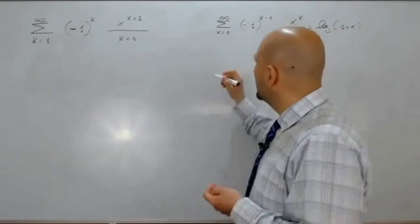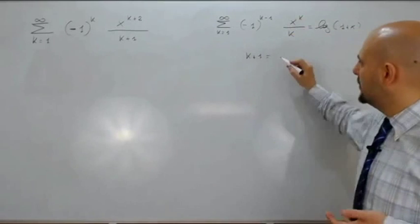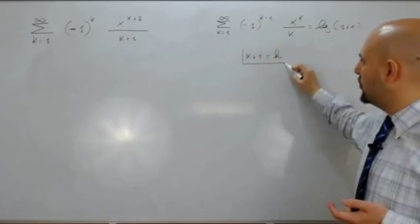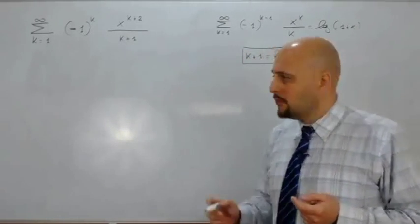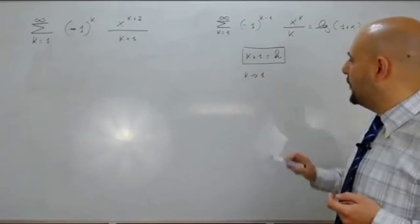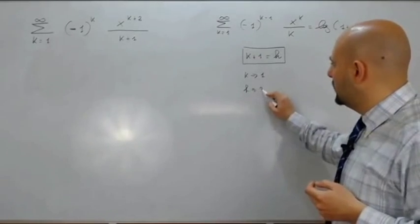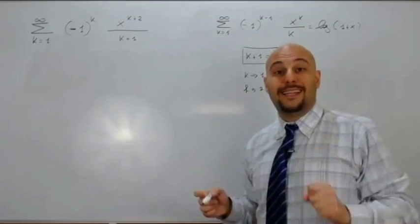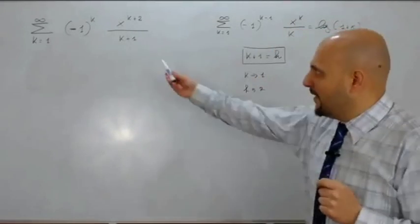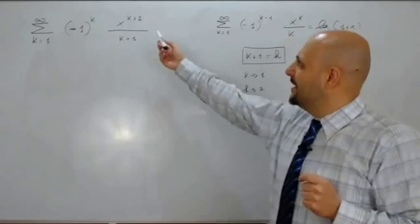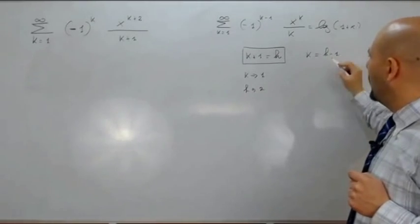Poniamo k più 1 uguale ad h. Questa è la sostituzione fondamentale. Attenzione: quando k va da 1 all'infinito, mettendo 1 al posto di k, h va da 2 all'infinito. Quindi la sommatoria partirà da 2 e andrà fino all'infinito. Avremo un h al denominatore. Chi è k? Se k più 1 è h, allora k è h meno 1. Chi è k più 2? È h meno 1 più 2, quindi h più 1.